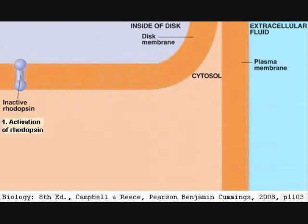The first step is activation of rhodopsin. This occurs when a photon strikes the 11-cis-retinal molecule in rhodopsin. The energy of the photon causes 11-cis-retinal to isomerize to 11-trans-retinal. The change in shape of retinal causes a conformational change in the opsin protein that binds it, leading to activation of rhodopsin.